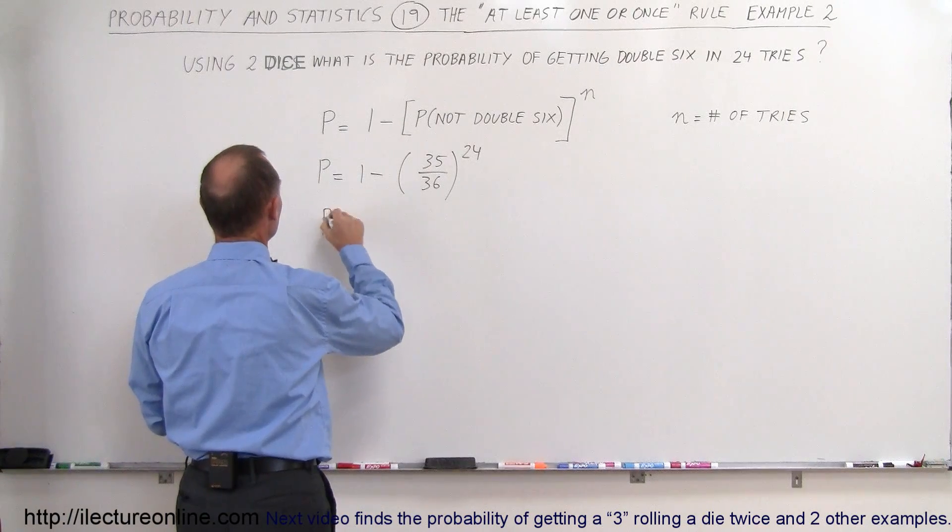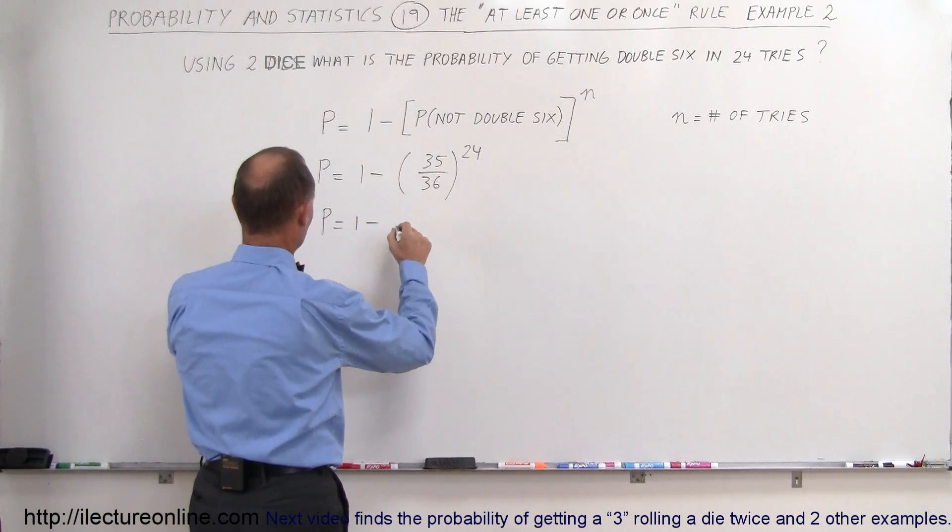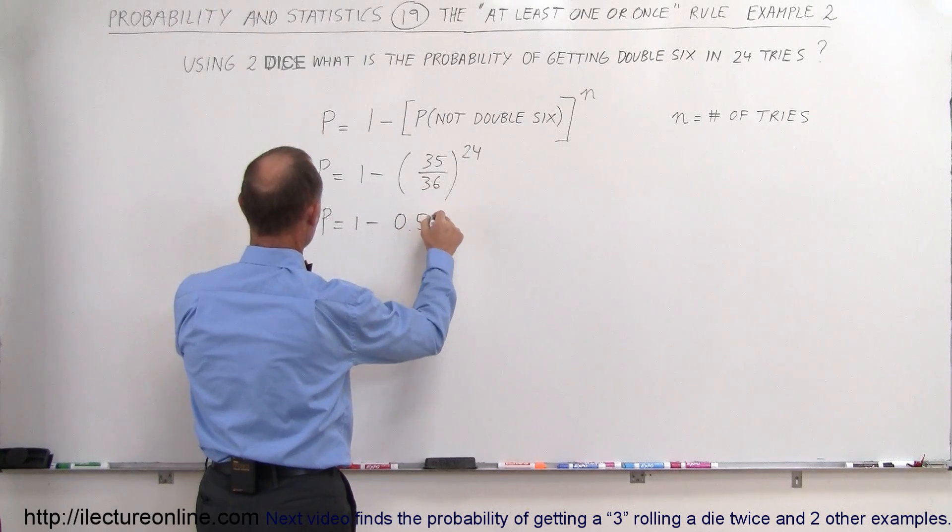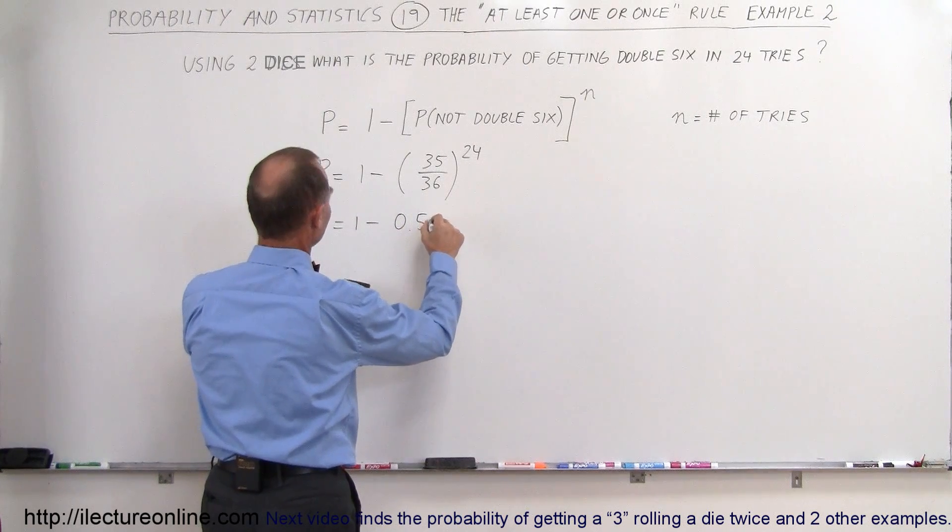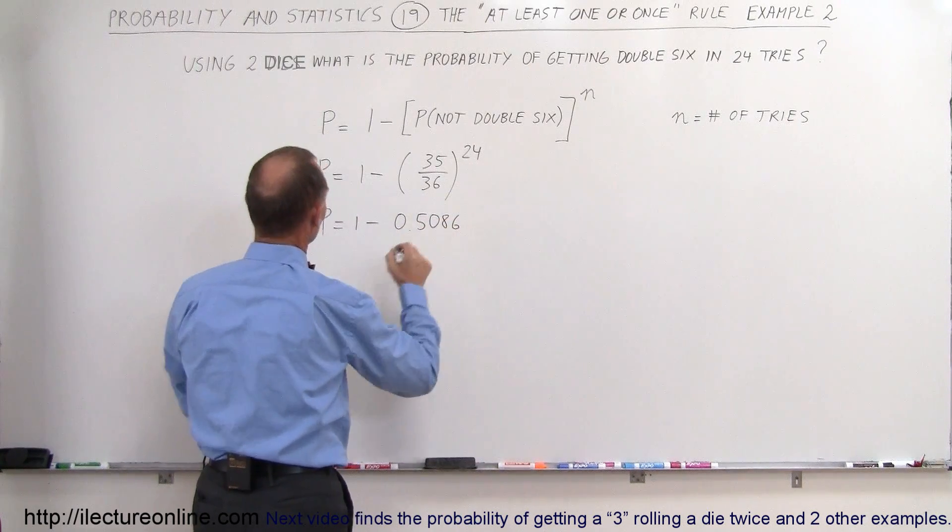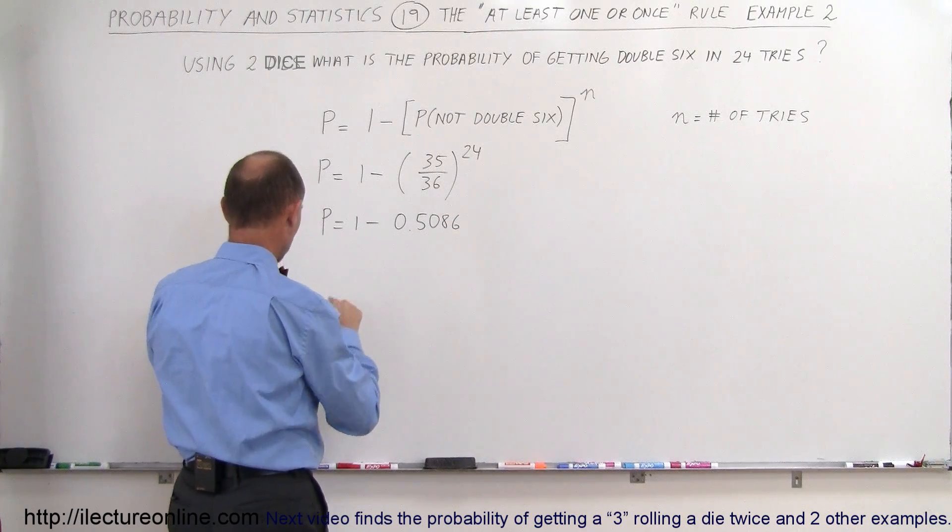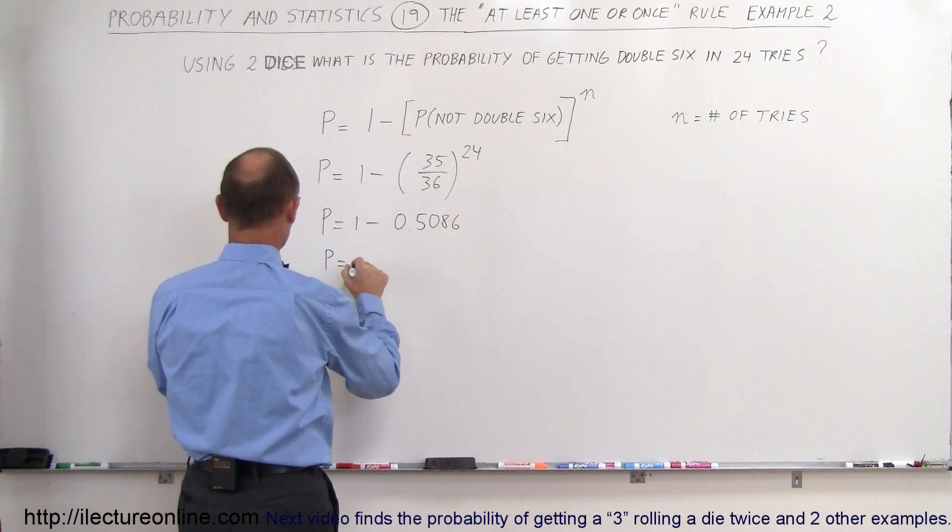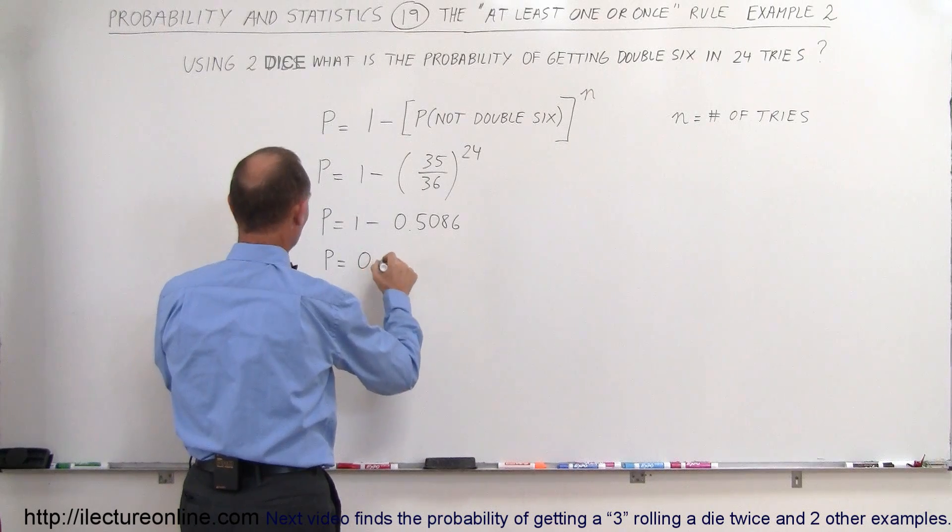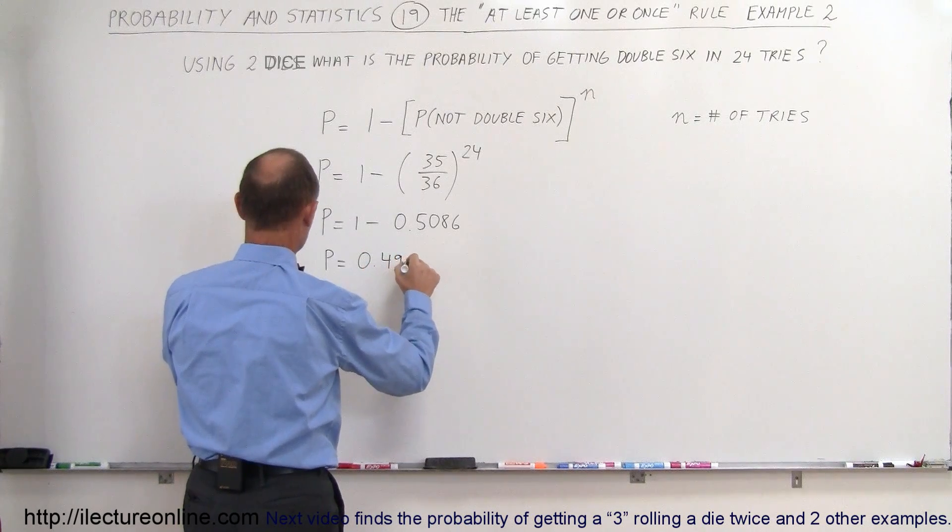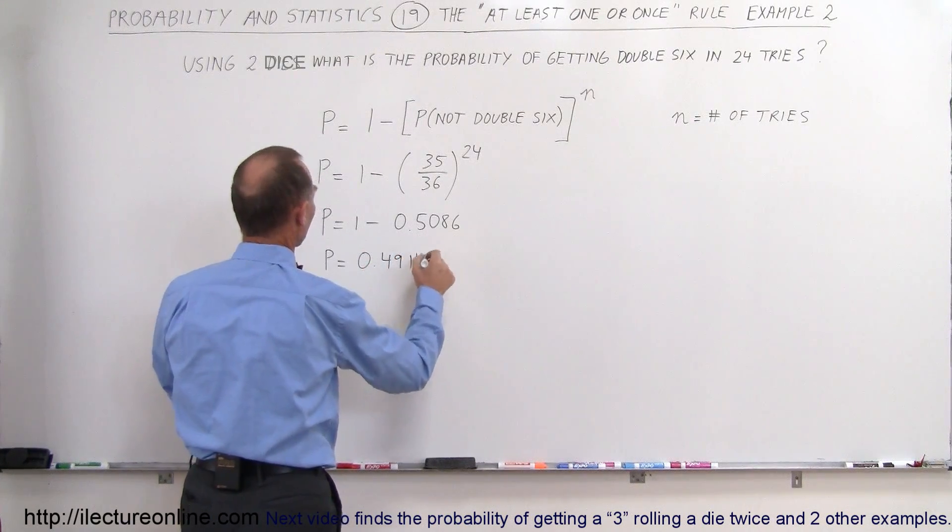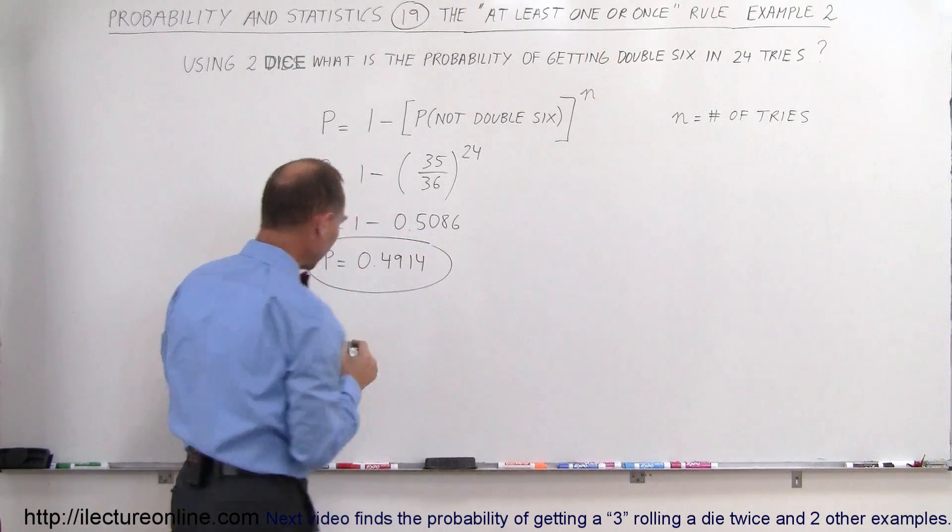So we get the probability is equal to 1 minus 0.5086. So therefore, when we subtract that from 1, we get the probability is equal to 0.4914. That's good enough. So there it is.